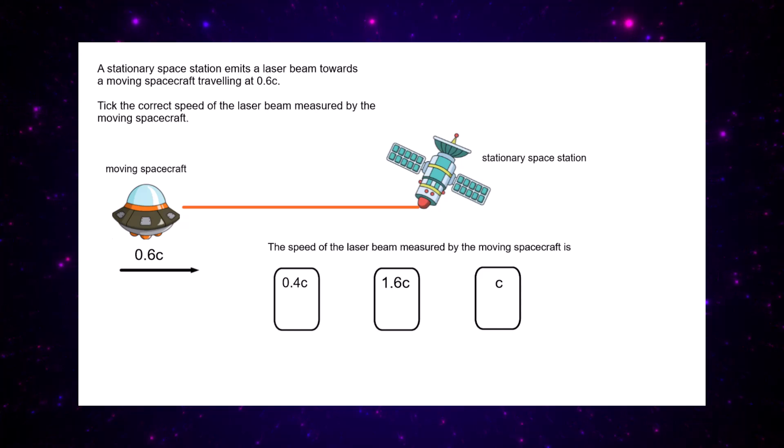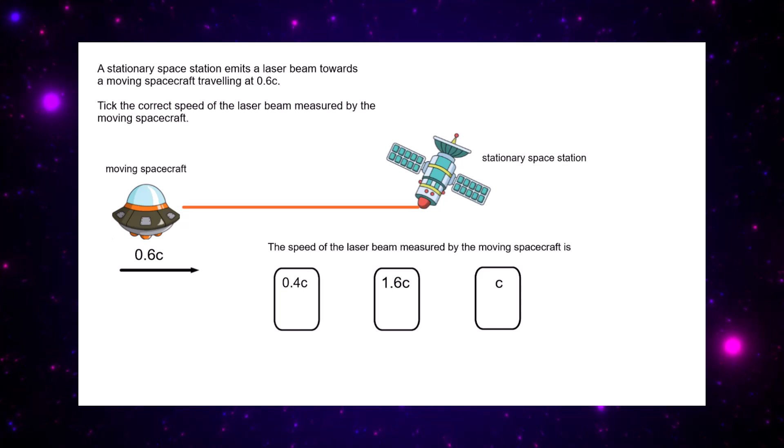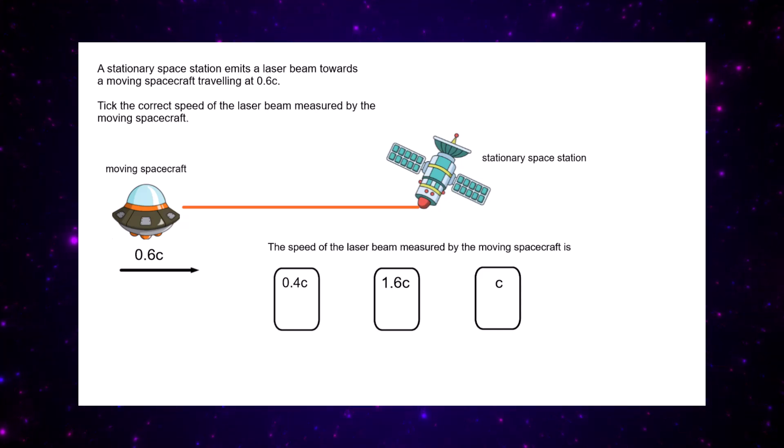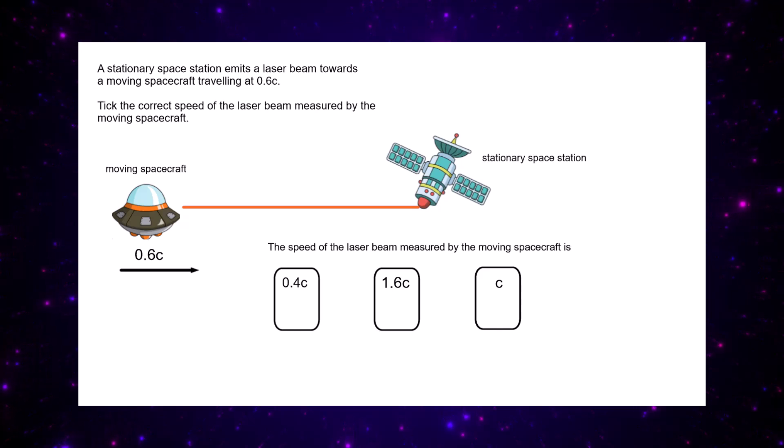A stationary space station emits a laser beam towards a moving spacecraft travelling at 0.6c. Tick the correct speed of the laser beam measured by the moving spacecraft. Now the laser beam is travelling at the speed of light, and the moving spacecraft is going towards it at 0.6c.